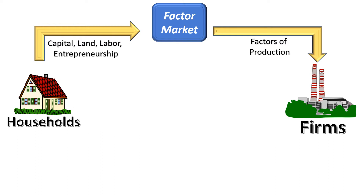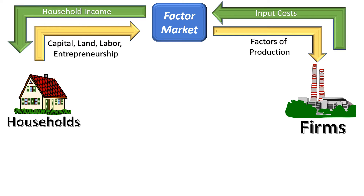Households don't just give away their resources for free. In a market economy, people live by selling things. Since we're selling capital, land, labor, and entrepreneurship, we expect to be paid. For businesses, the money they pay for their factors of production are called input costs. From the household perspective, we see that as our income — like your wages from work, or if you sold your property or resources, like oil on your property sold to an oil company, that money becomes your household income.